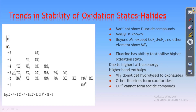Here in this table, we can see the D block elements — that is the transition elements — with the higher oxidation state. That is titanium at +4 oxidation state, vanadium in +5 oxidation state, chromium in +6 oxidation state. All these elements show fluoride compounds.